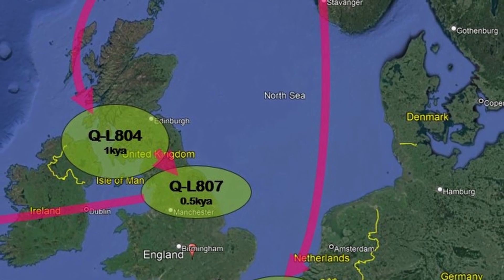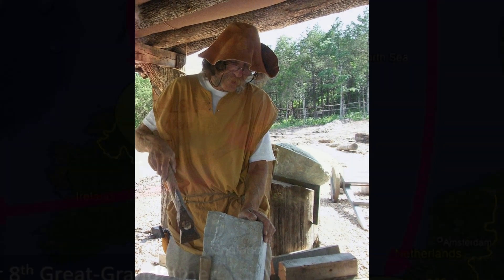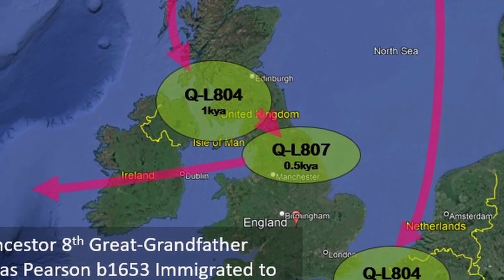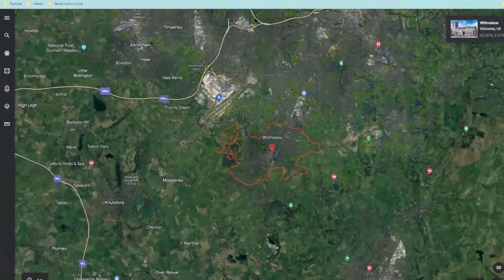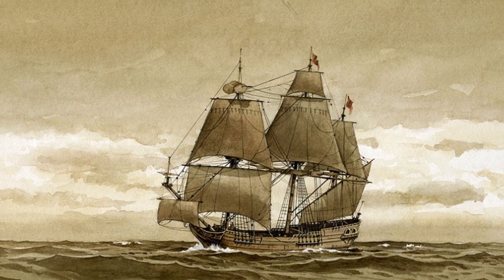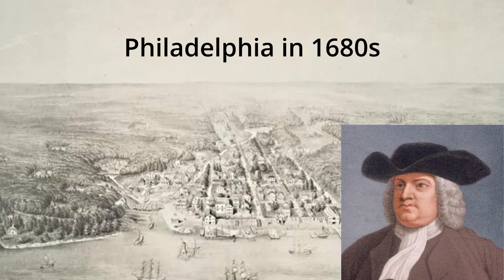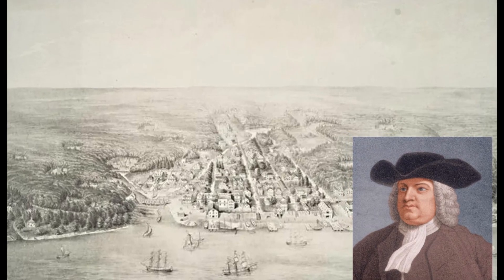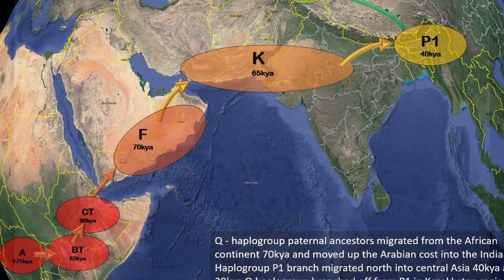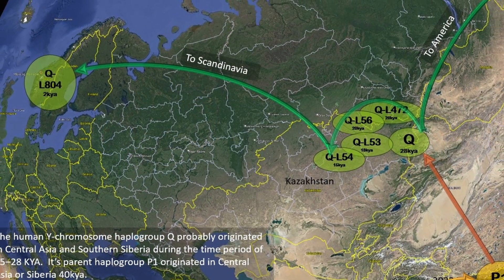Fast forward to the year 1682 when Thomas Pearson, seeking refuge from the persecution faced by Quakers in England, decided to leave Winslow, a small farming community located just south of Manchester, England. Pearson sailed on a journey across the Atlantic Ocean, arriving in Philadelphia, Pennsylvania. It was in this new land that William Penn had designated lands for the Quakers, envisioning a utopia free from English persecution. The journey of my haplogroup QL807 to reach America has indeed been a long one.